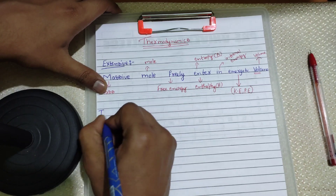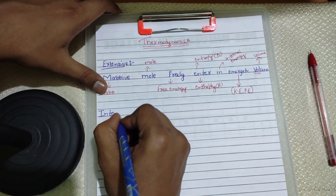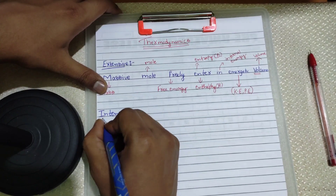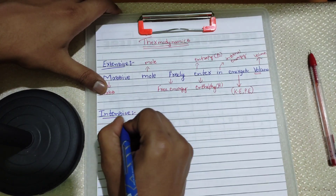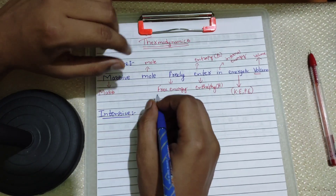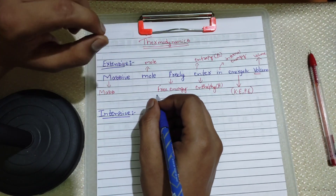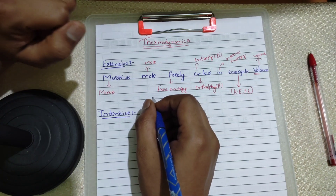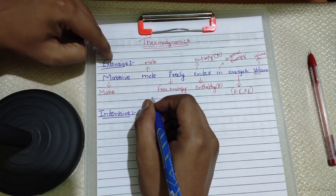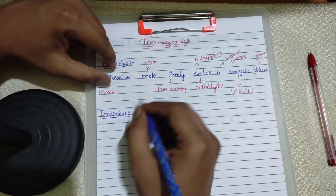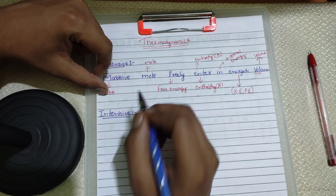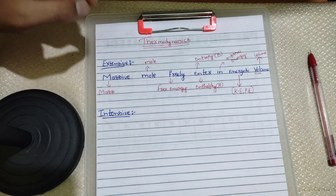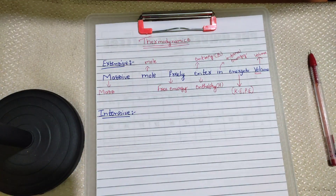Now let us come to intensive properties. Intensive properties are those properties which depend only on the type of matter but do not depend on the amount of matter. Extensive properties depend on the amount of matter, but intensive properties do not.